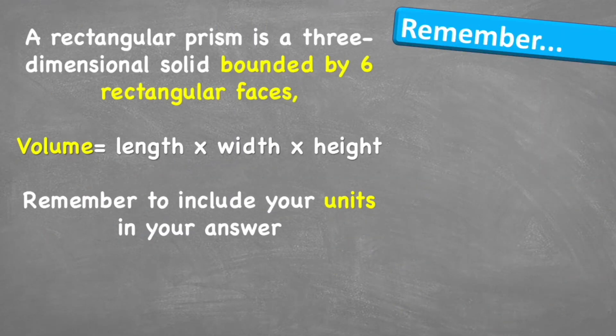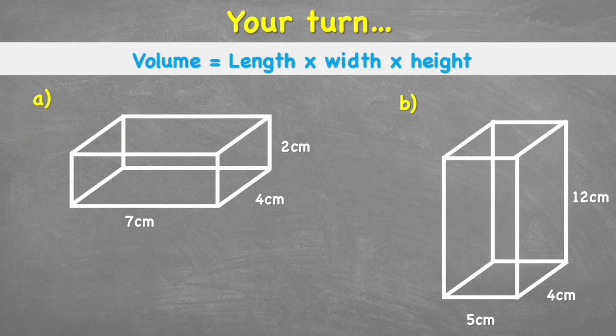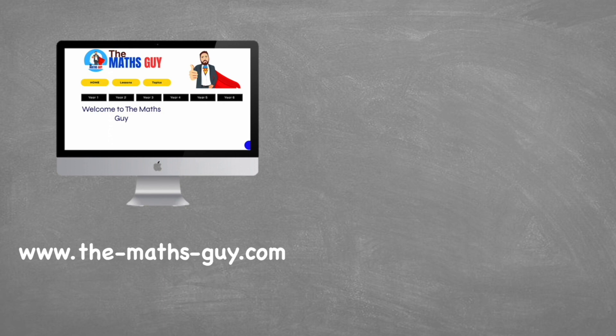To summarize: a rectangular prism is a three-dimensional solid bound by six rectangular faces. The formula for volume is length times width times height, and this is commutative — it does not matter which order you multiply them. Always include your units in your answer. Your turn — have a go at the two practice questions and put your answers in the comment section. Thanks for watching — share it with a friend who might benefit. Peace out.